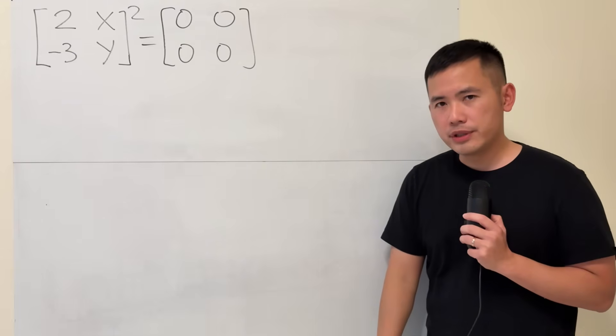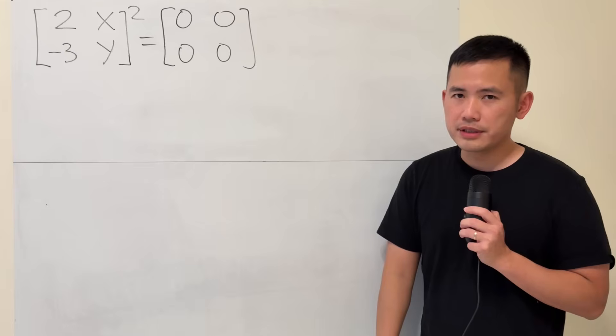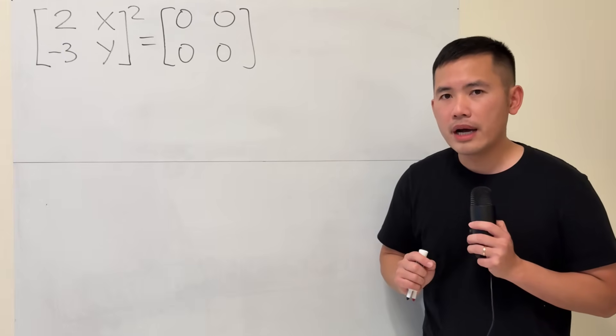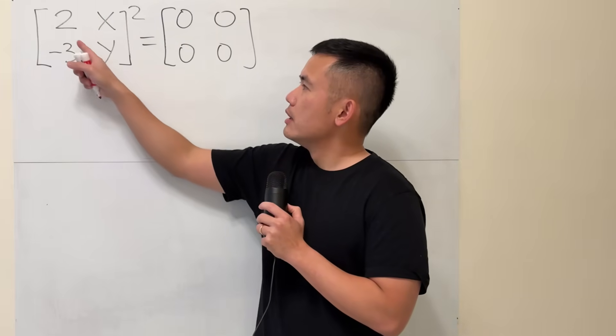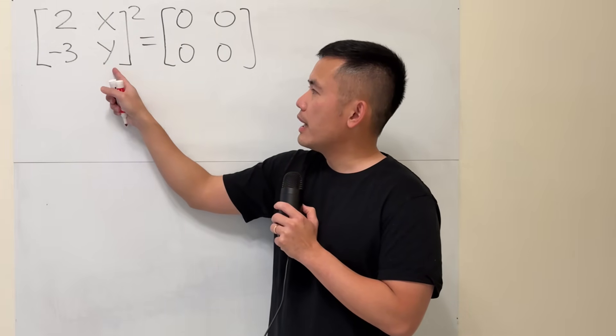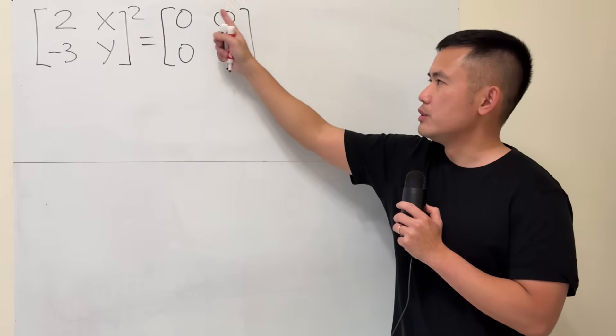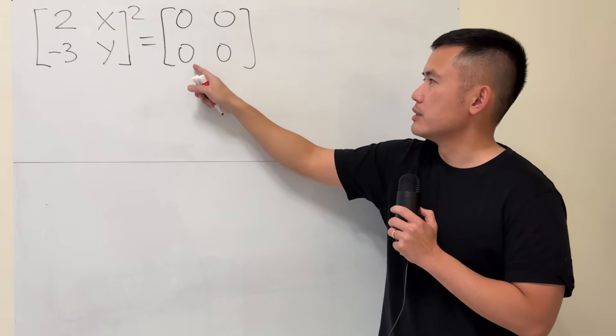So this might look like a regular matrix equation, but it's actually very interesting. The goal is to find x and y so that this matrix, 2x - 3y, if we square that, we end up with the zeros matrix, which is just 0, 0, 0, 0.